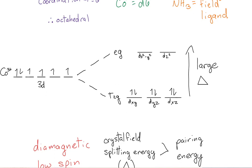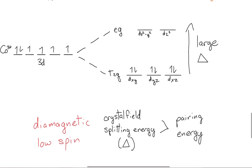We can see that there are no unpaired electrons. So, our ion is diamagnetic. Plus, the crystal field splitting energy is larger than our pairing energy, making this a low spin ion.